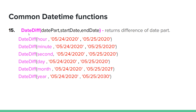This is DATEDIFF — date difference. DATEDIFF returns the difference of the date part between two dates. Date return the difference.